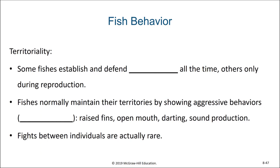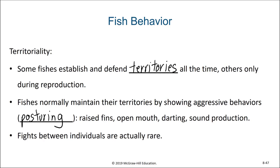Some fish are very territorial. They establish and defend their territories at all times, while others might only be territorial during reproduction. Fish normally maintain their territories by showing aggressive behaviors called posturing. This can include raising fins, opening mouth, darting, even producing sound. Fights between individuals are actually rare.